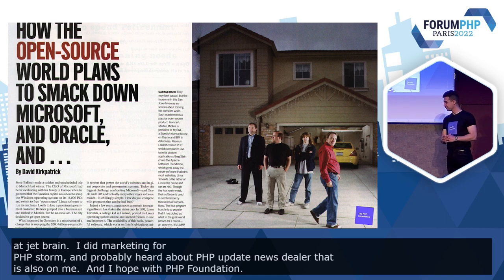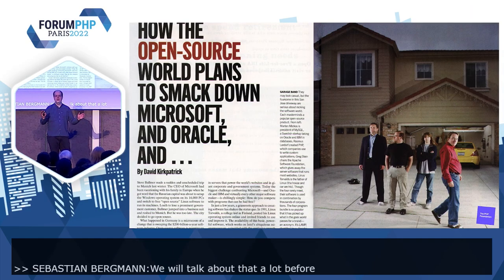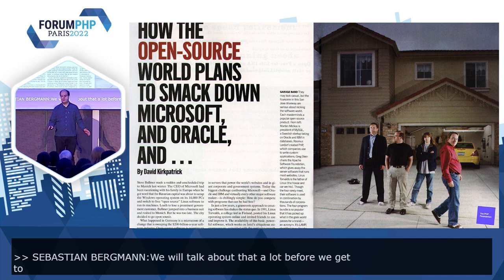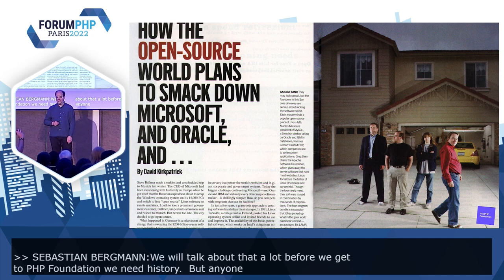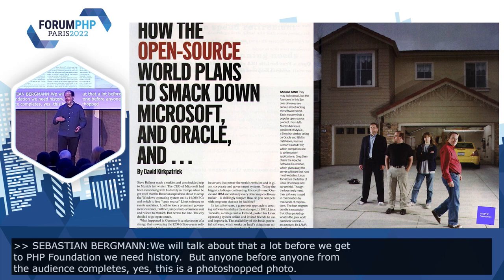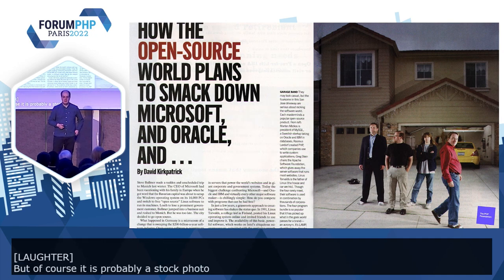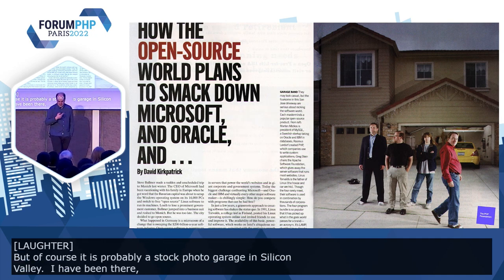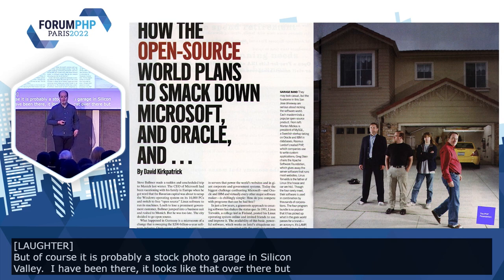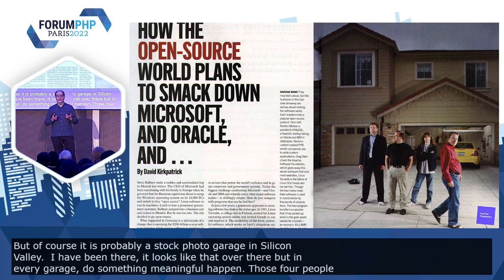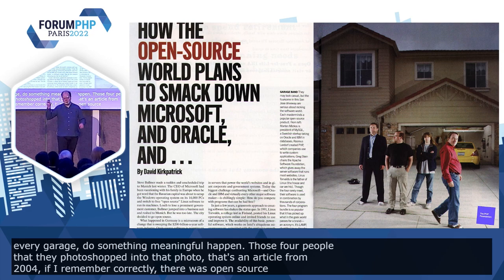Before we get to the PHP Foundation, we need some history. And before anyone from the audience complains, yes, this is a Photoshopped photo. It's probably a stock photo garage in Silicon Valley. Not in every garage something meaningful happens. Those four people photoshopped into that photo — that's an article from 2004 about how the open source world plans to smack down Microsoft and Oracle. That's from Forbes or Fortune or one of those magazines.